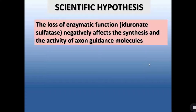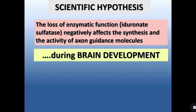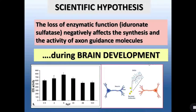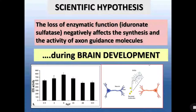We had two reasons for this assumption. First, we already demonstrated in the past that the enzyme is highly expressed during early development. Second, we reasoned that the products of iduronate-2-sulfatase, known as glycosaminoglycans, are important for the function of these axon guidance molecules. This is well known in the literature.